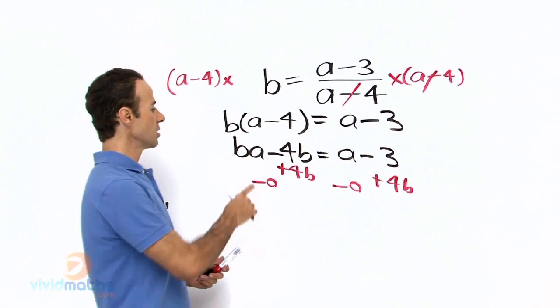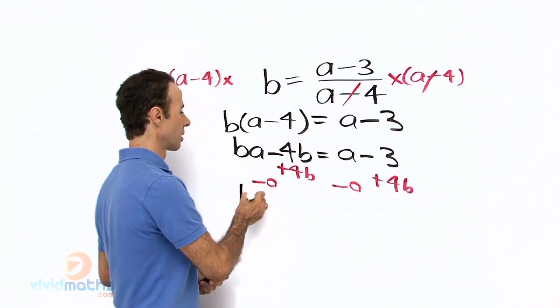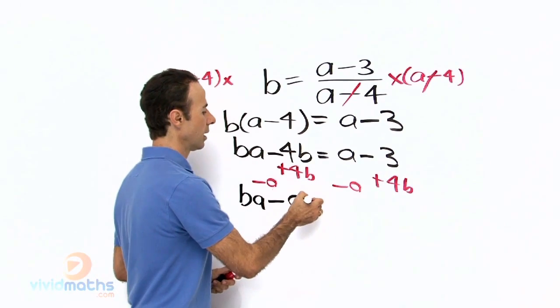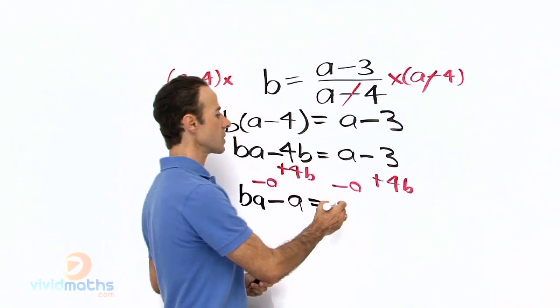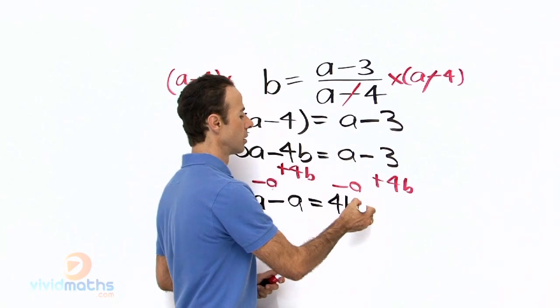So what we have here is BA minus A equals 4B minus 3.